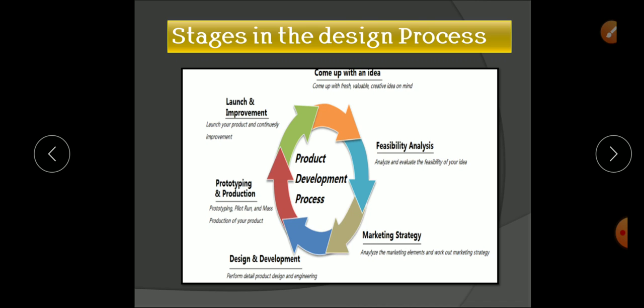After sorting out the feasible ideas, we do a market strategy — analyzing market elements and working out the marketing strategy for the idea. Then we go for design and development, which is the most important part of the product development process. At the feasibility stage we perform a number of analyses, iterate, and finalize the idea through market strategy. Finally, we perform detailed product design and engineering based on the market strategy.